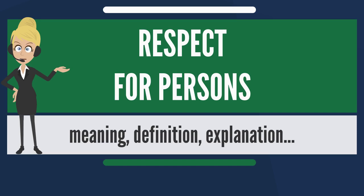Respect for Persons comprises two essential moral requirements: to recognize the right for autonomy and to protect individuals who are disadvantaged to the extent that they cannot practice this right. An autonomous person is defined as an individual who is capable of self-legislation and is able to make judgments and actions based on his or her particular set of values, preferences, and beliefs. Respecting a person's autonomy thus involves considering his or her choices and decisions without deliberate obstruction.